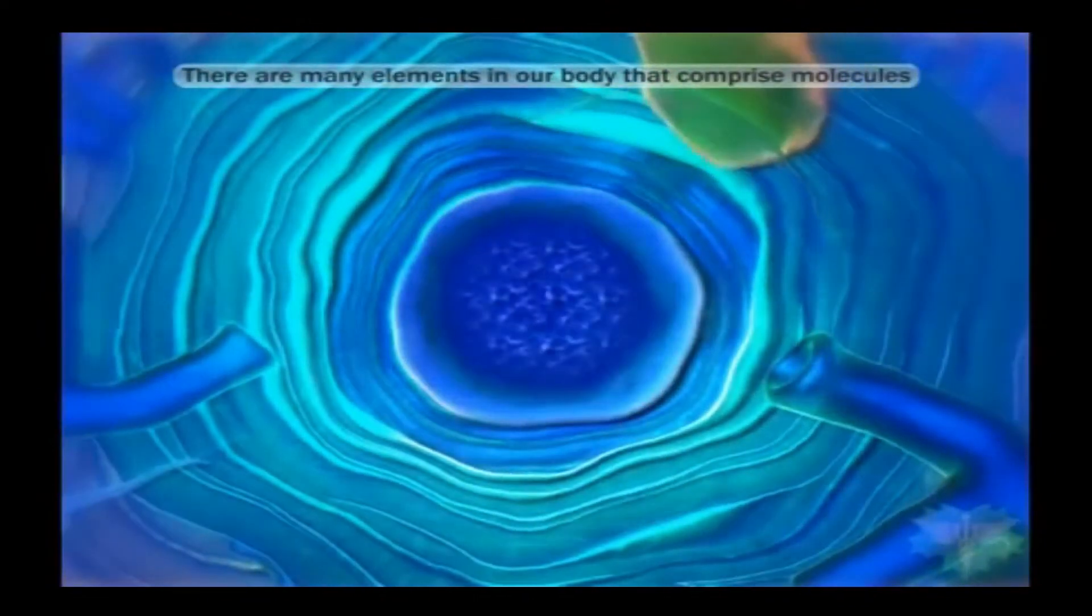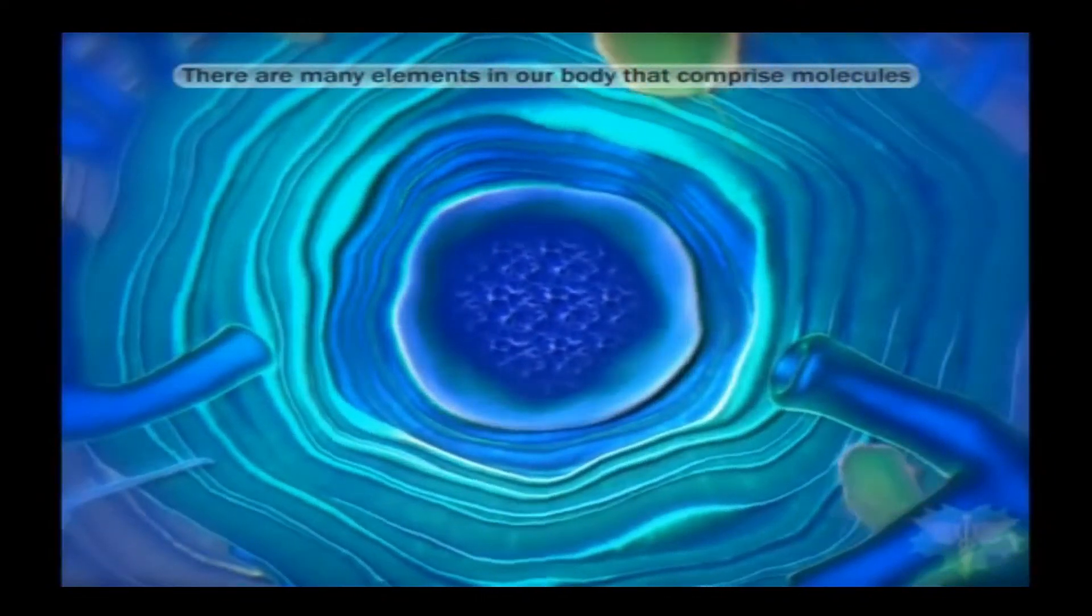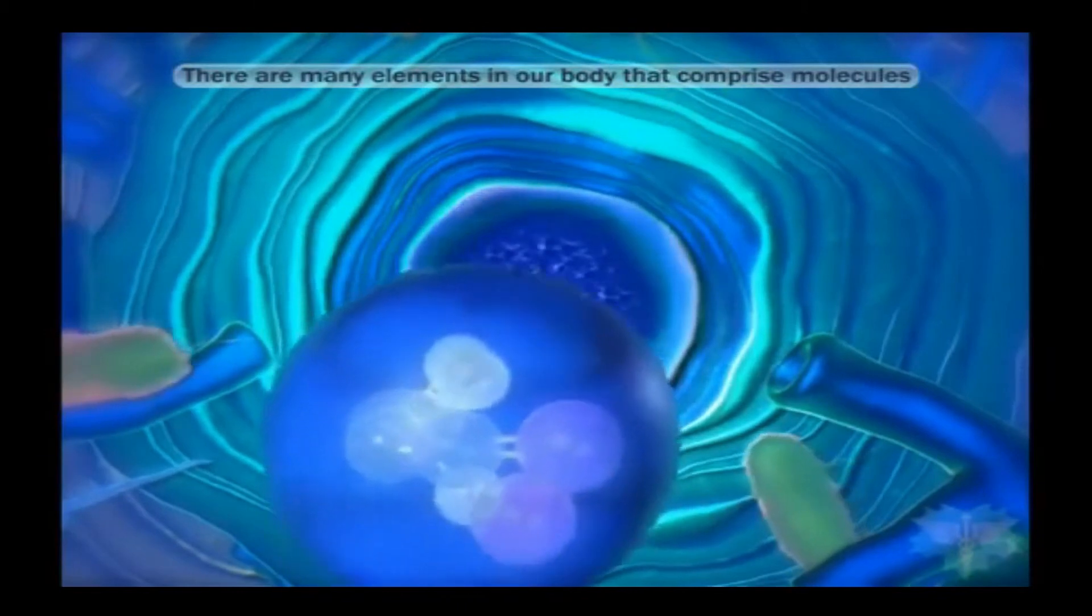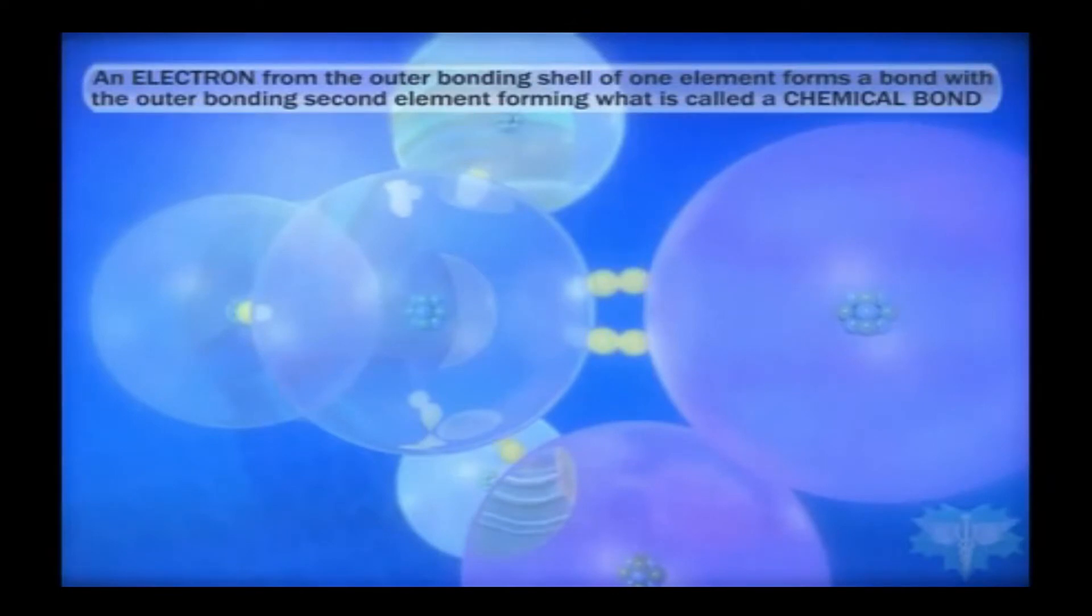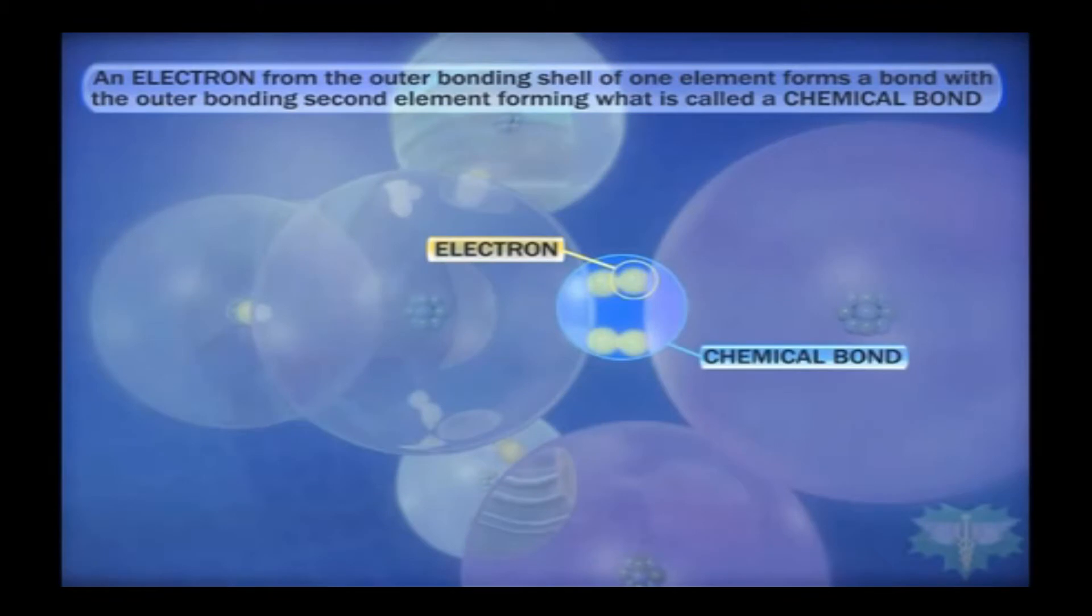There are many elements in our body that comprise molecules. An electron from the outer bonding shell of one element forms a bond with the outer bonding shell of a second element, forming what is called a chemical bond.